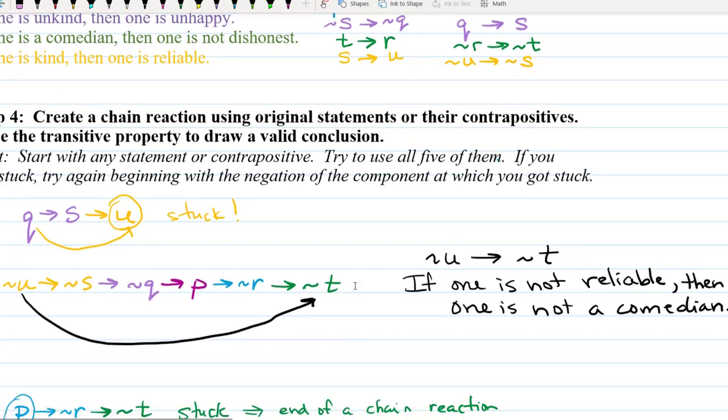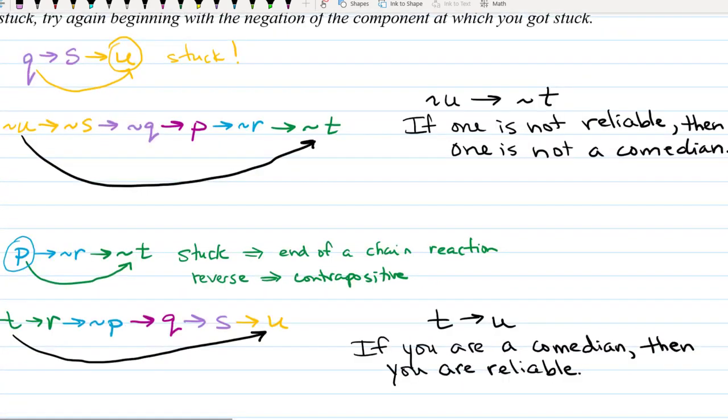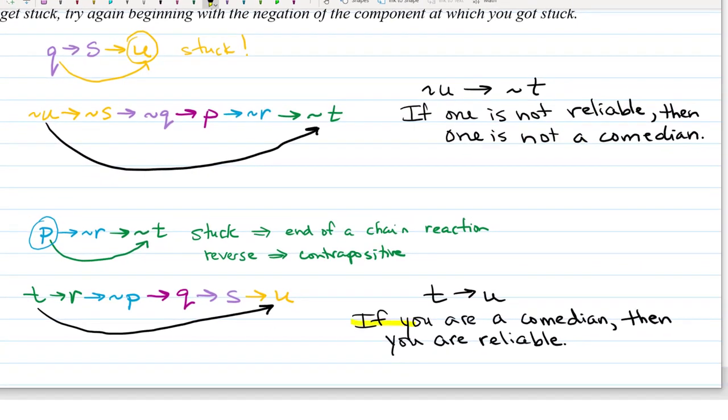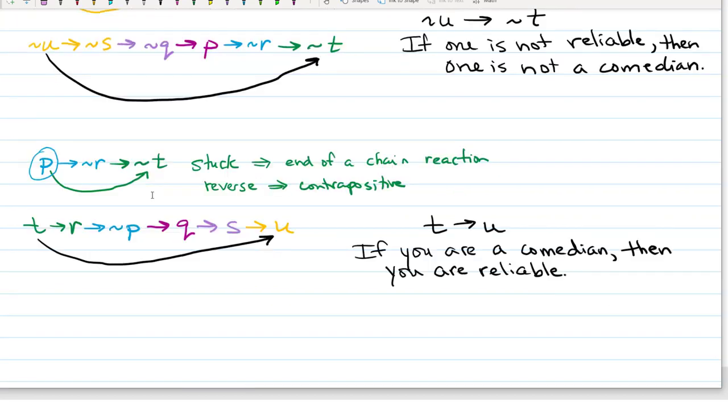All right. So let's see. That looks a little different than what we got before, right? Let's take a look. So in this case, we got if one is not reliable, then one is not a comedian. And previously we got if you are a comedian, then you are reliable. Well, notice that these are contrapositives of each other. Their order is reversed and their signs are changed. So in other words, they're equivalent and both answers are correct.